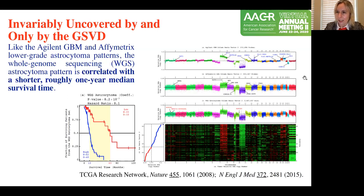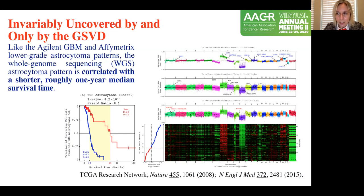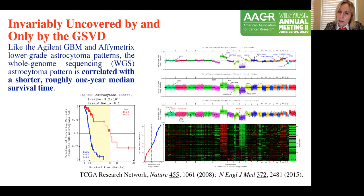Looking at three different cases from TCGA, we found the same tumor-exclusive pattern in the data again and again. First, we looked at glioblastoma patients whose genomes were measured by Agilent microarrays. Then lower-grade astrocytoma patients measured by Affymetrix microarrays. Then whole genome sequencing data. And not only did we find, to zeroth order, the same genomic pattern of variation across the whole genome in terms of DNA copy numbers, but this pattern again and again correlated with a shorter, roughly one-year median survival time for the patients.